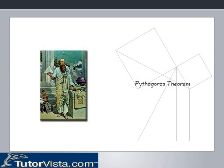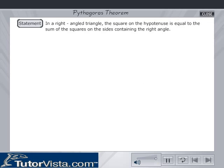Pythagoras Theorem. In a right-angled triangle, the square on the hypotenuse is equal to the sum of the squares on the sides containing the right angle.